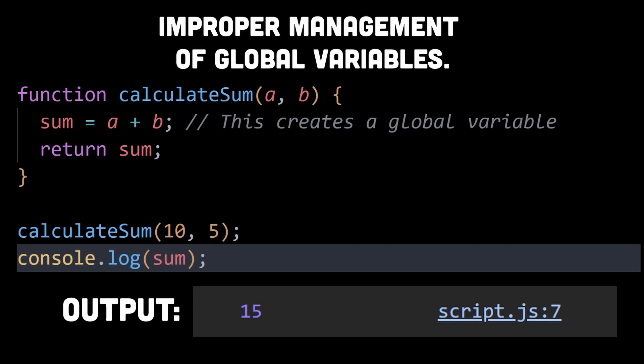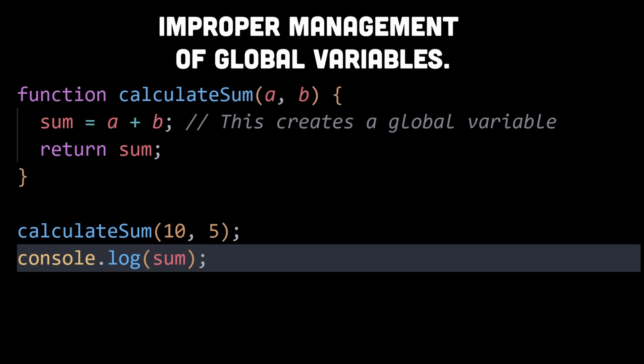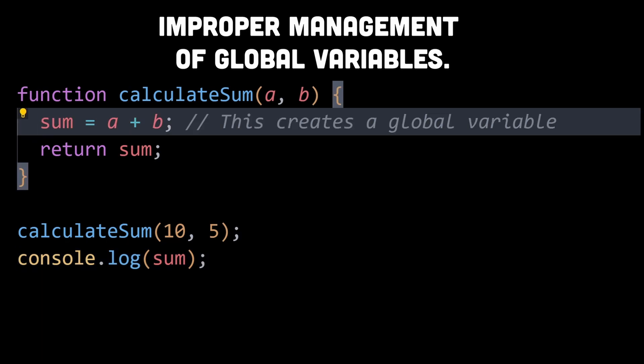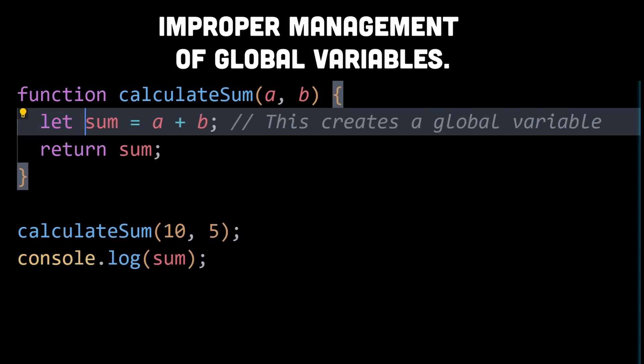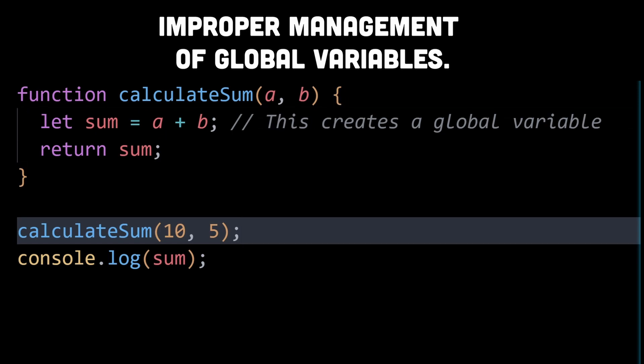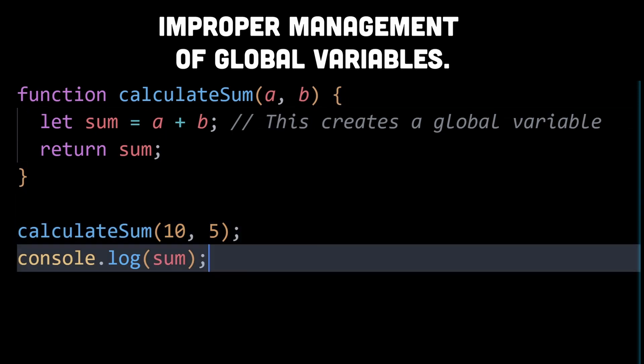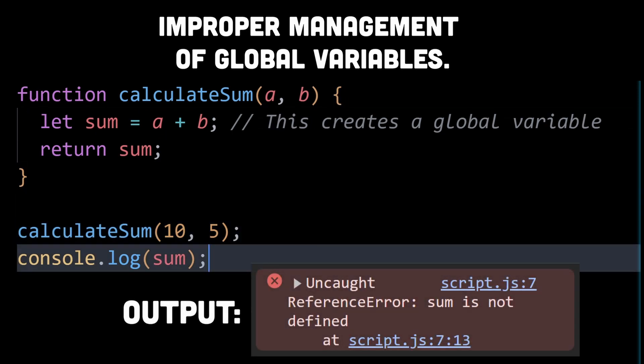This means that after the function has executed, sum is still accessible and taking up memory. To fix this, you can declare the sum variable with let, const, or var to ensure that it has the correct scope and doesn't unintentionally become global. Now the sum variable won't be accessible outside the calculateSum function and it will be properly garbage collected after the function's execution.